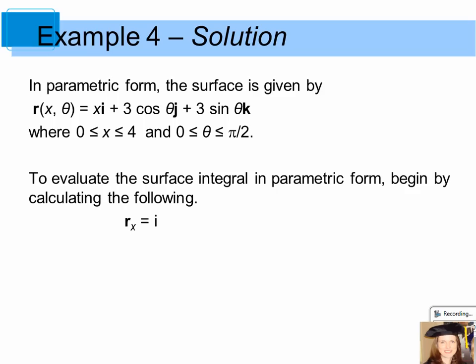To evaluate the surface integral in parametric form, you want to begin by calculating the following. Find the partial derivative of r with respect to x and r with respect to theta. Then find the cross product of those and then the magnitude of the cross product.